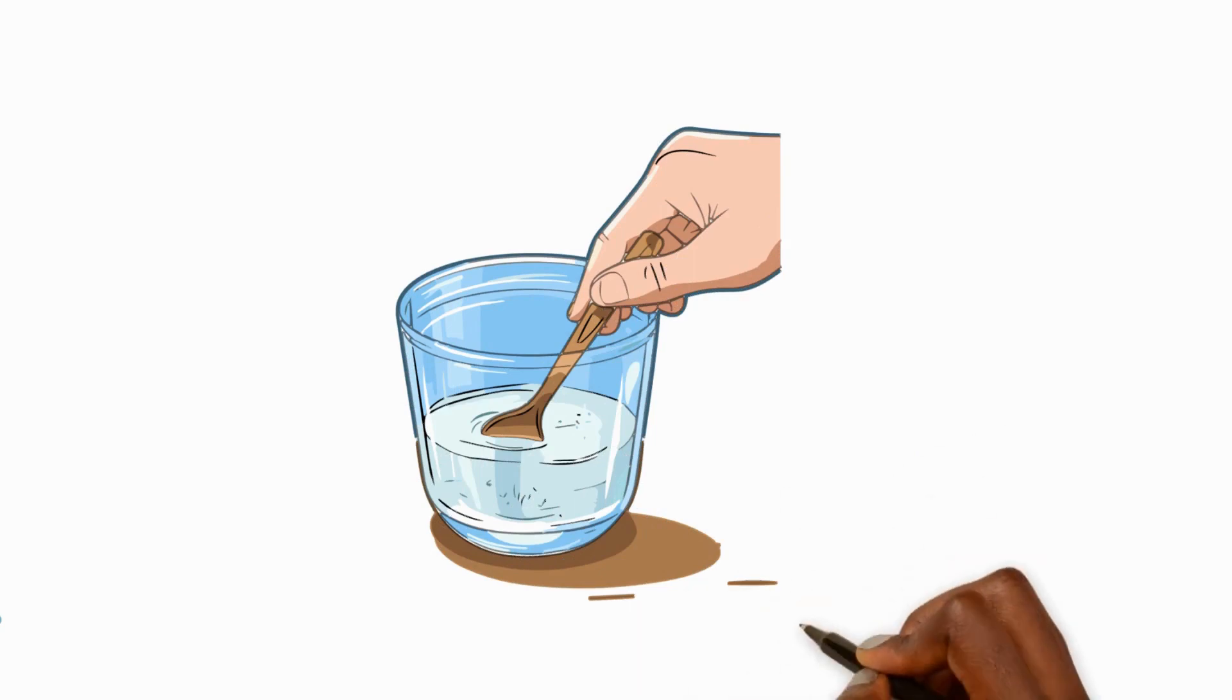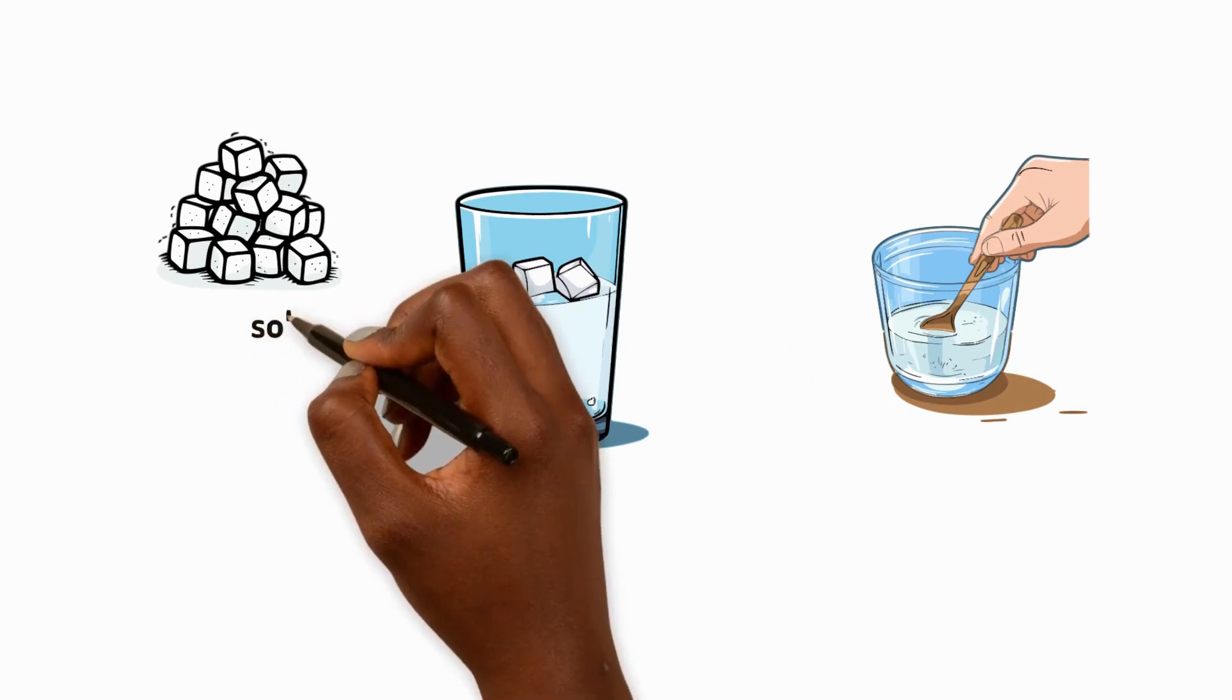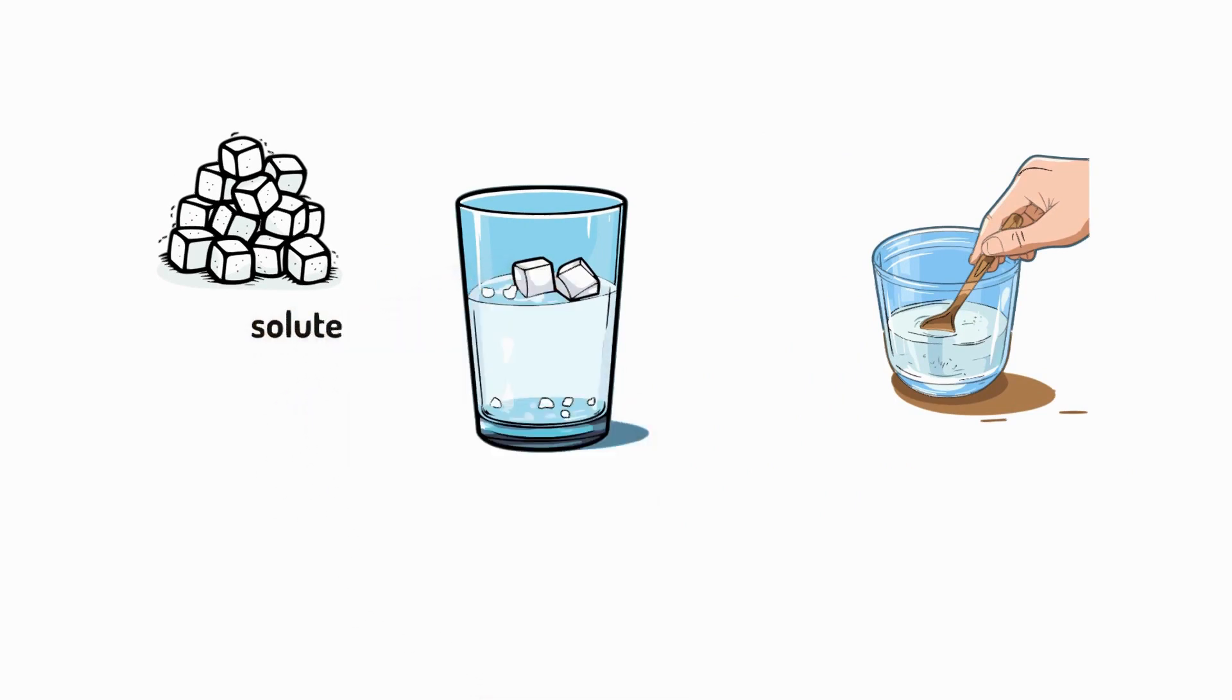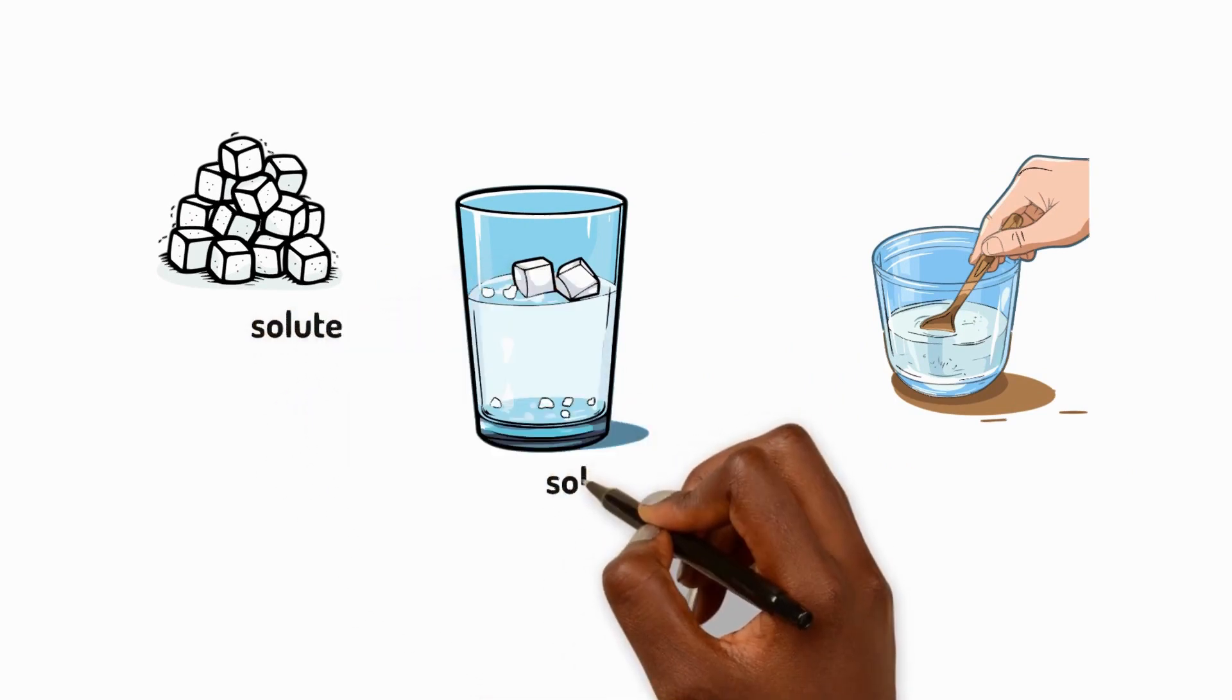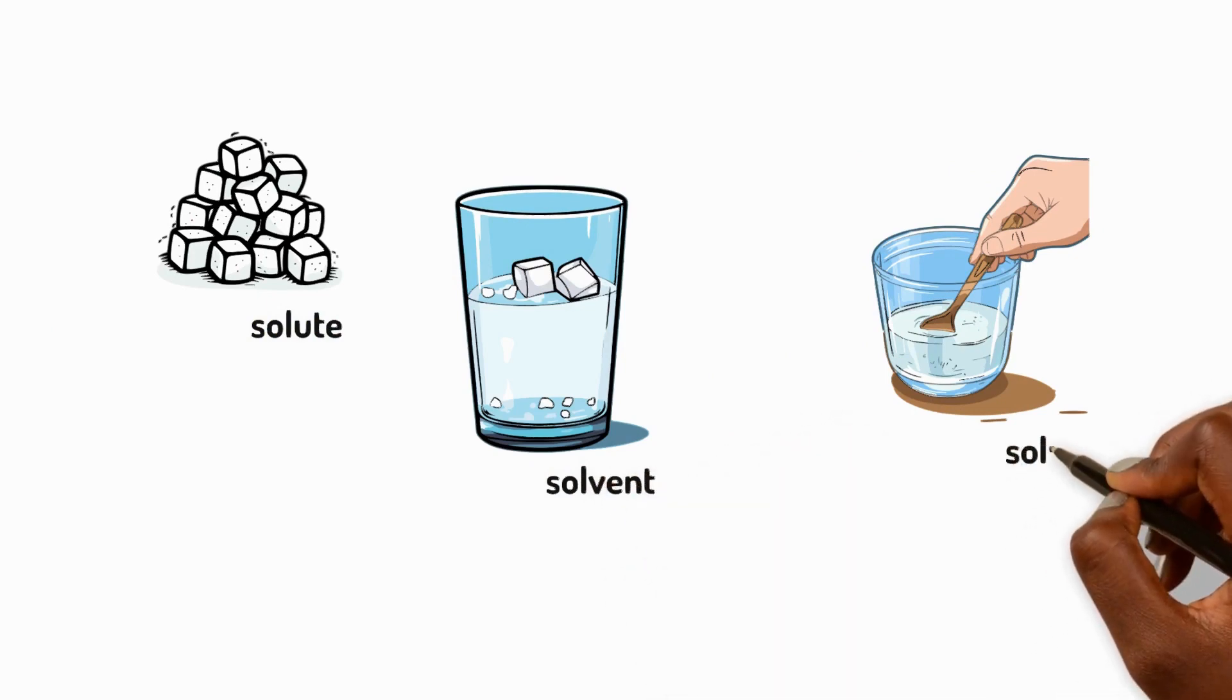We use special words to describe a mixture where something dissolves. The solid is called the solute, the liquid is called the solvent, and the resulting mixture is the solution.